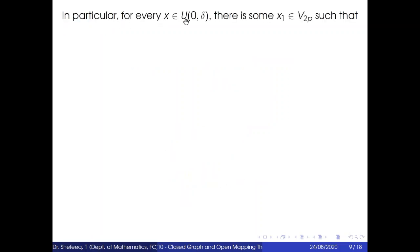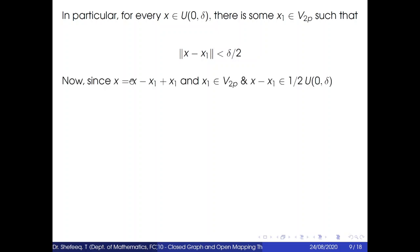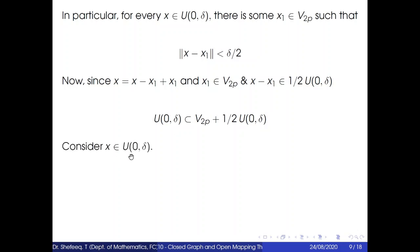In particular, for every x belonging to U(0, δ), there is some x₁ belonging to V₂p such that the norm of x − x₁ is less than δ/2. Since x = (x − x₁) + x₁, and x₁ belongs to V₂p and x − x₁ belongs to (1/2)U(0, δ), therefore U(0, δ) is a subset of V₂p + (1/2)U(0, δ).